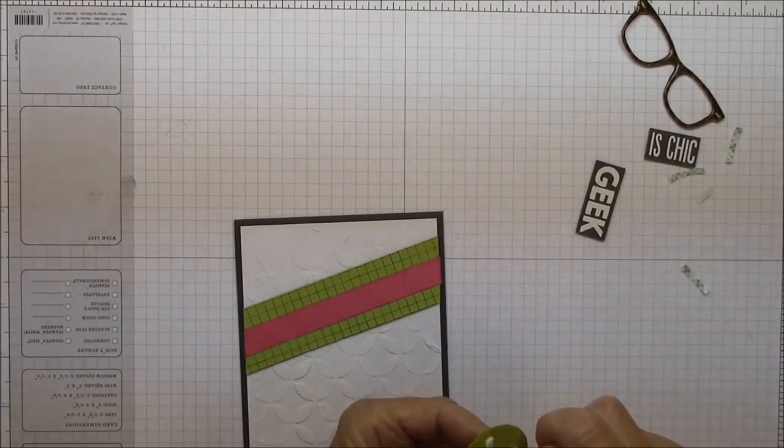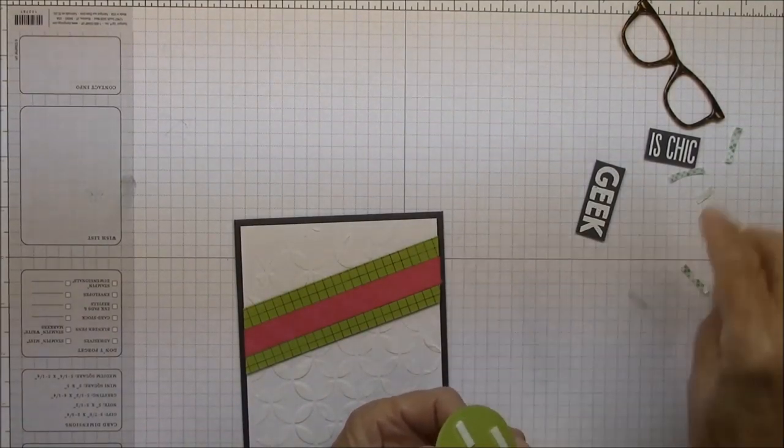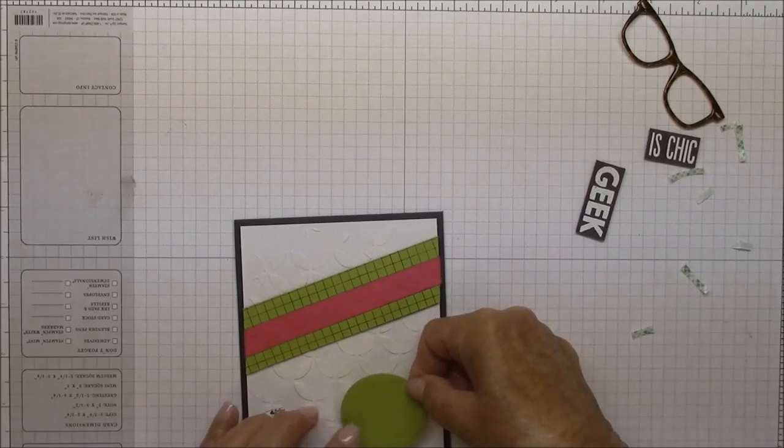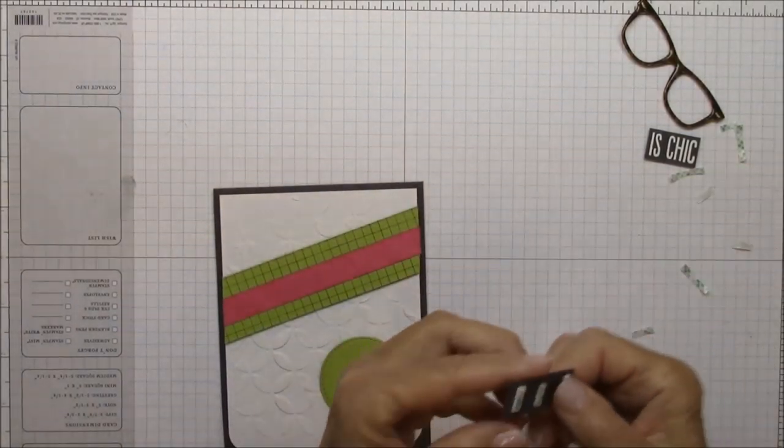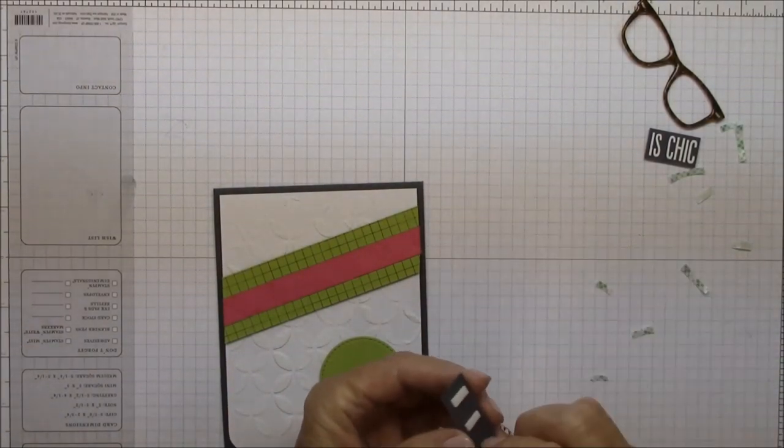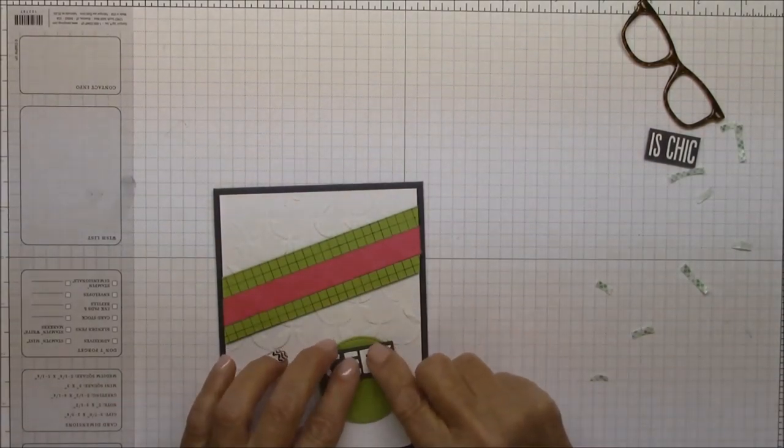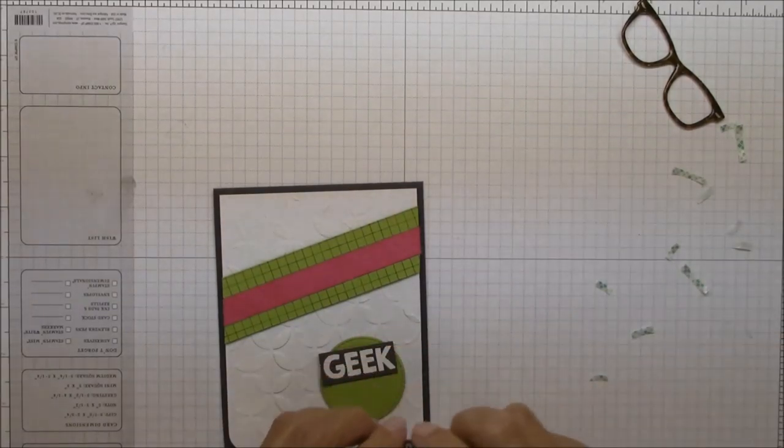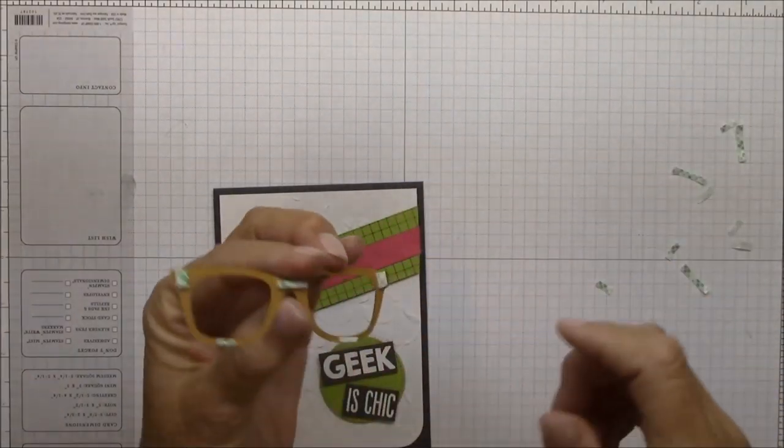Now I also have some tape on the back of the green circle. So I'm going to remove that backing and apply it towards the bottom of the card. And now the sentiment. I'm going to put it on kind of a wonky angle. This was stamped with Versamark on steel gray cardstock and heat embossed with white embossing powder.